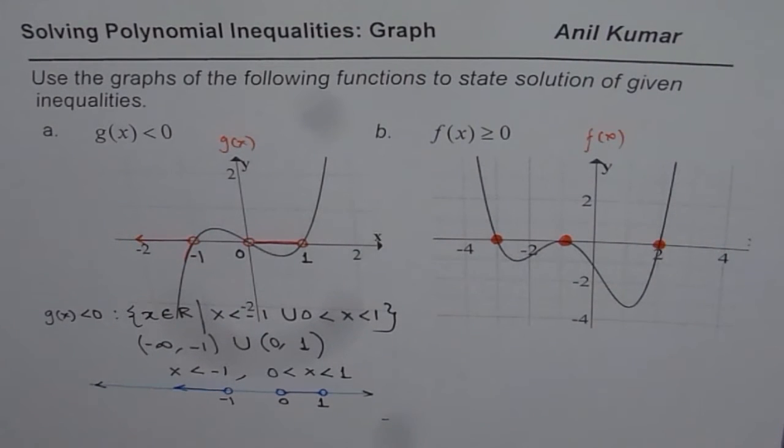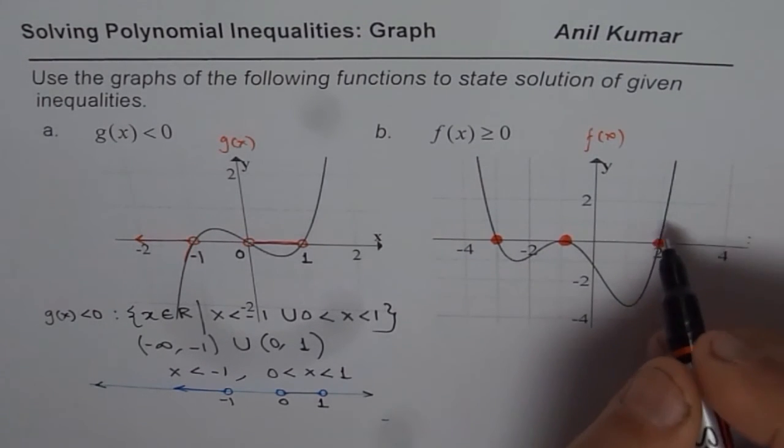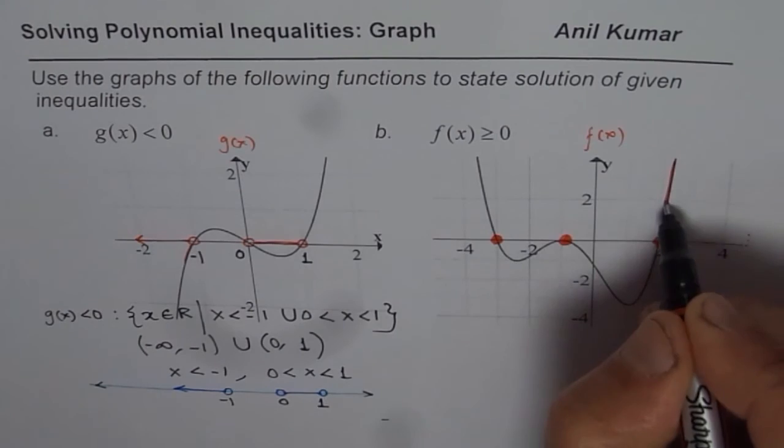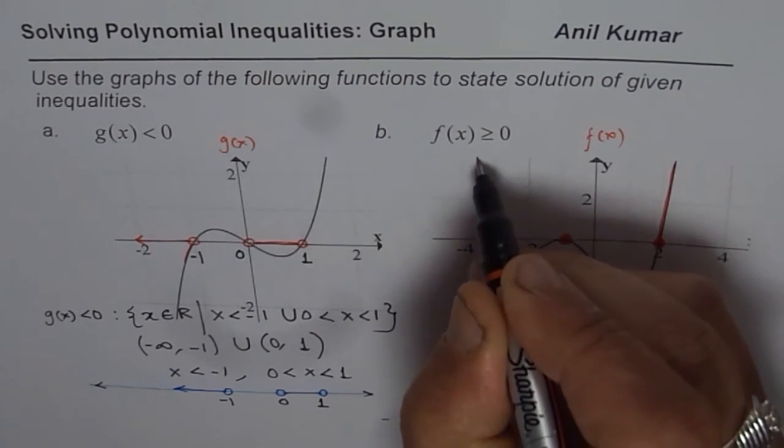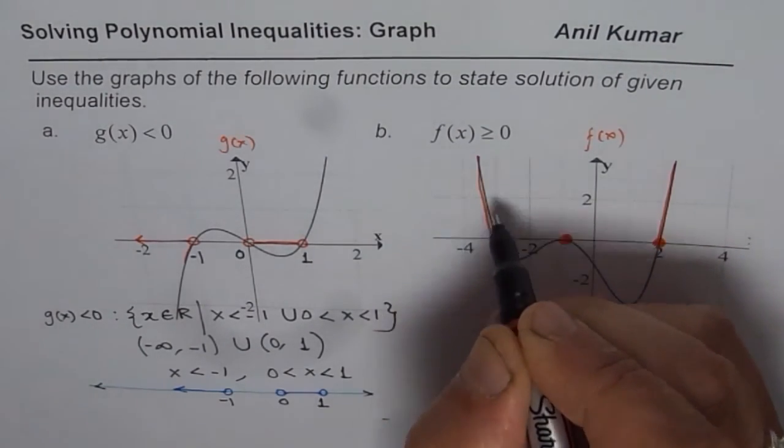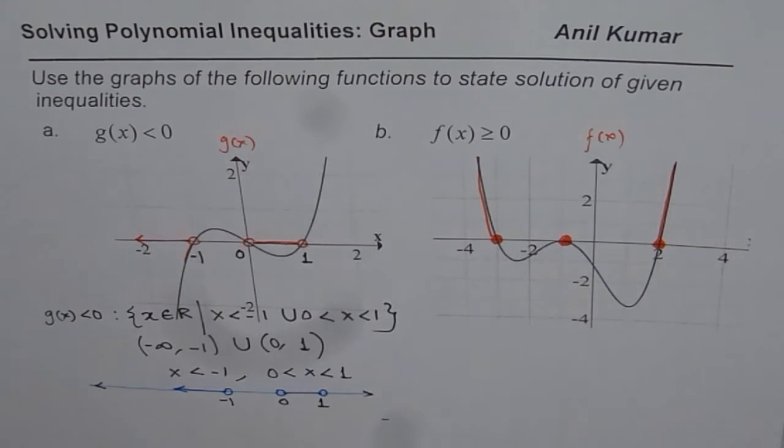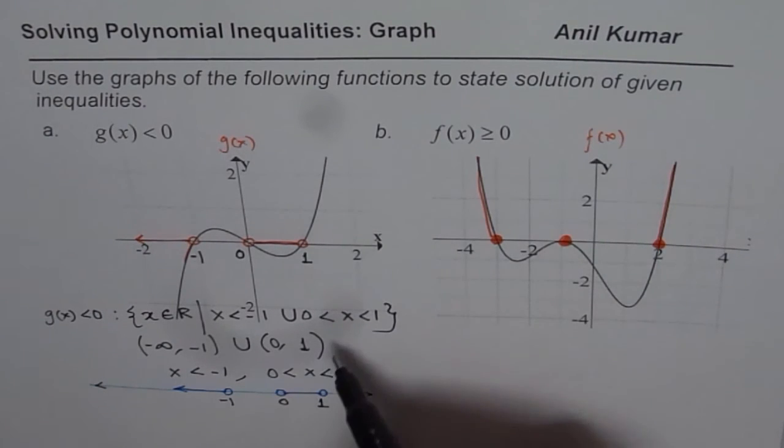Now, we need greater than. Now we have already taken equal to, greater than means the graph is above the x-axis, so we are basically looking for this half. So these are the points. Now we can write our solution in any form.